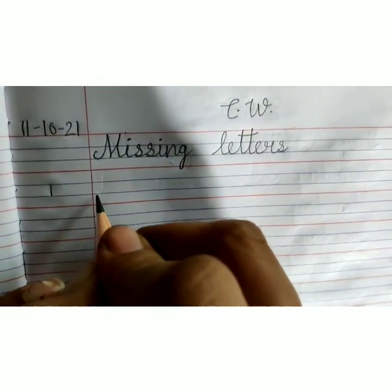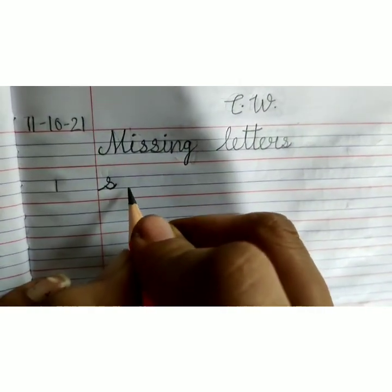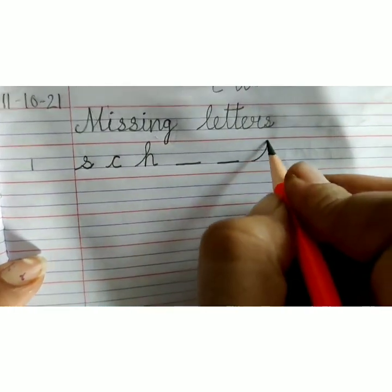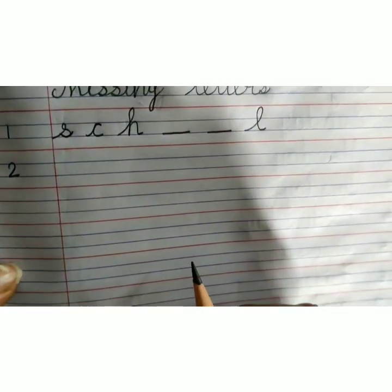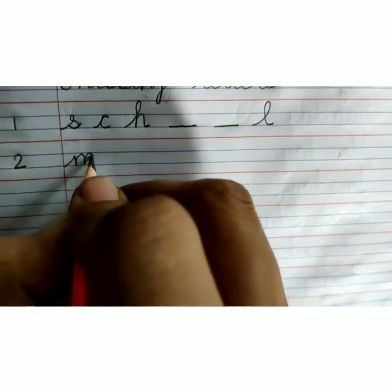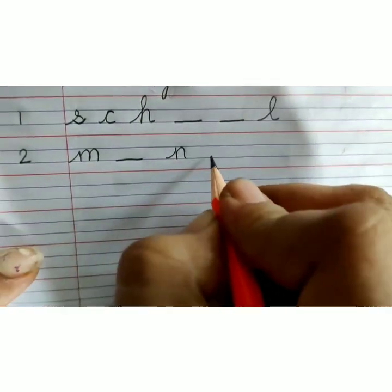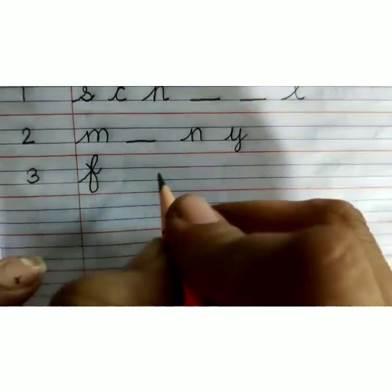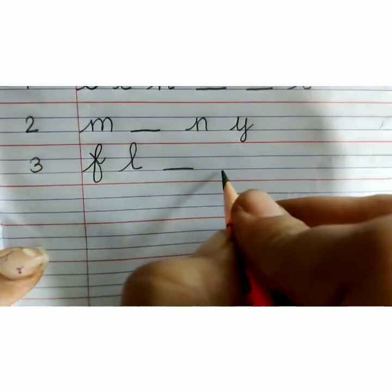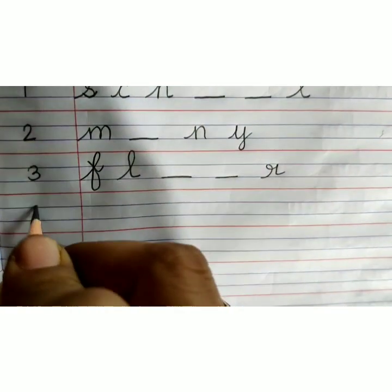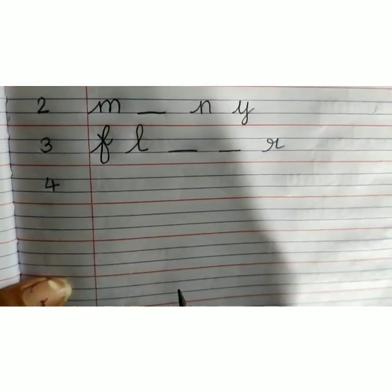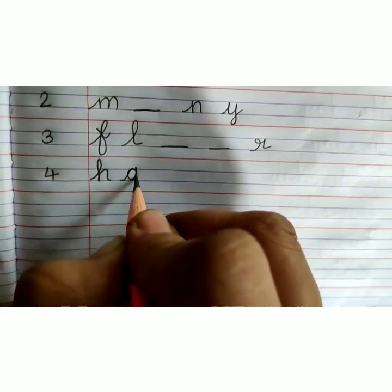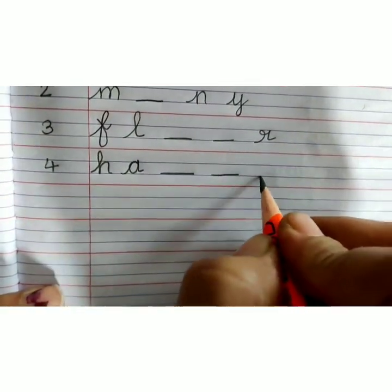In margin, write number 1, S-C-H-Dash-L. Number 2, M-N-Y. Number 3, F-L-R. Number 4, H-A-Dash-Y.